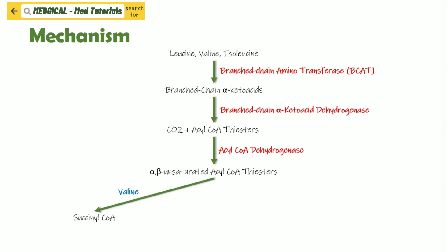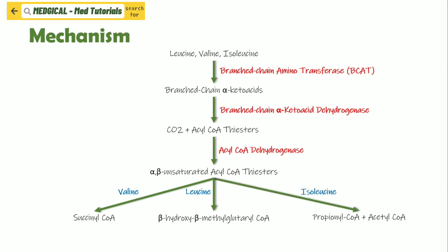From valine, it will form succinyl coenzyme A. From leucine, it will form beta-hydroxy-beta-methylglutaryl coenzyme A. And from isoleucine, it will form propionyl coenzyme A plus acetyl coenzyme A.